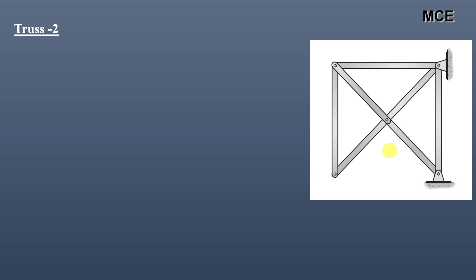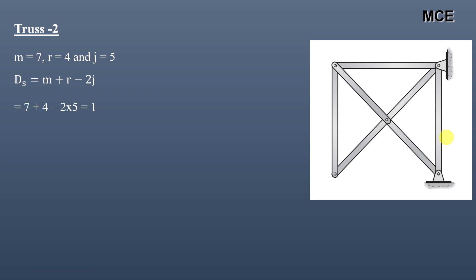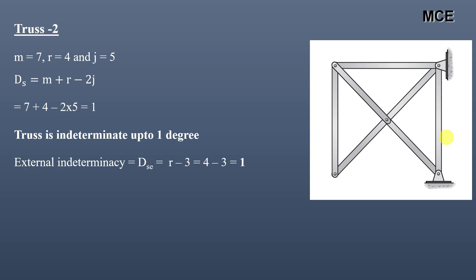For truss two, this truss has a total of 7 members, 4 reactions (two at the hinge support and two at the roller), and 5 joints. The value of ds equals 1, meaning this truss is indeterminate to one degree. The external indeterminacy equals the number of reactions minus 3, so 4 − 3 = 1.